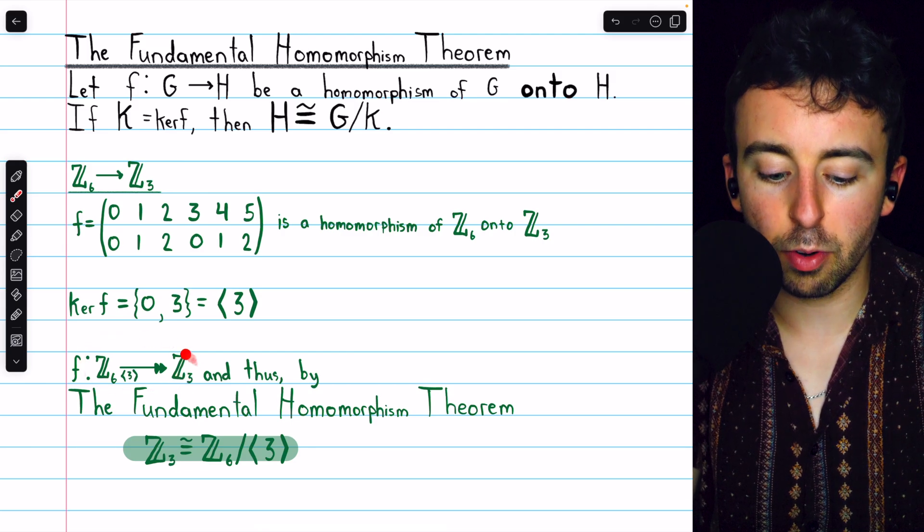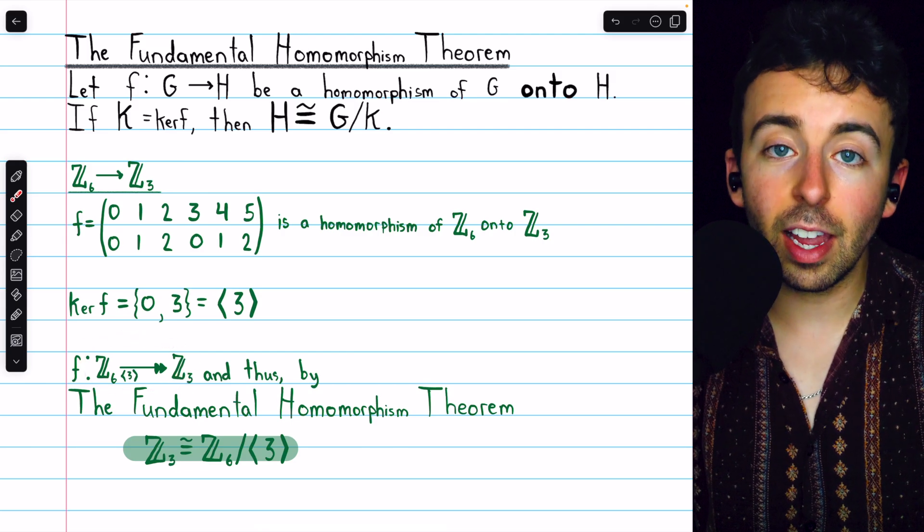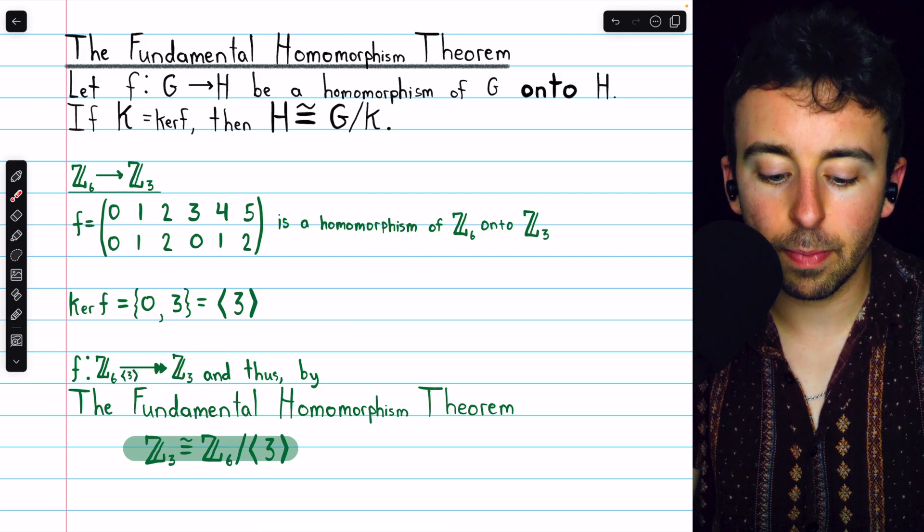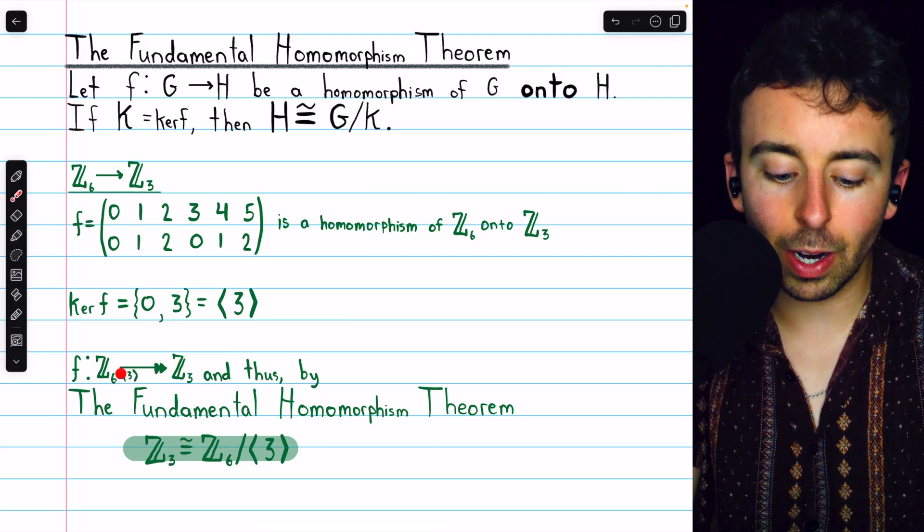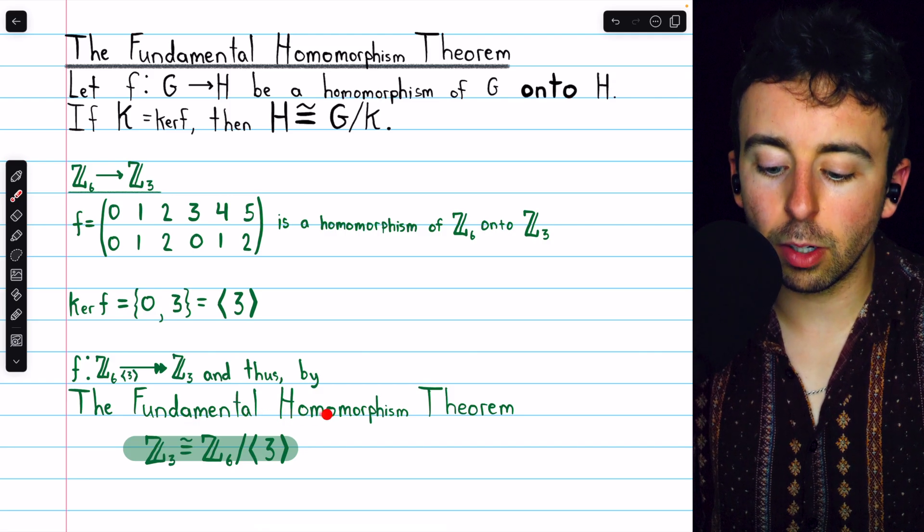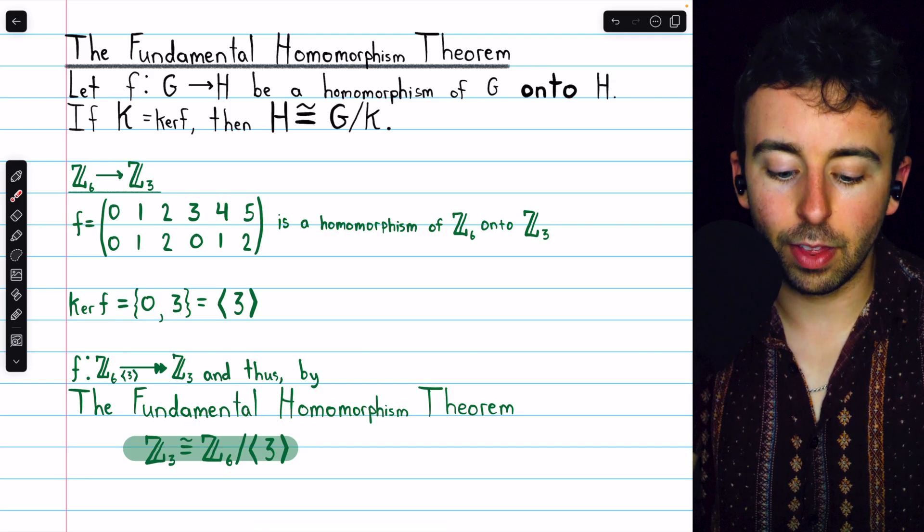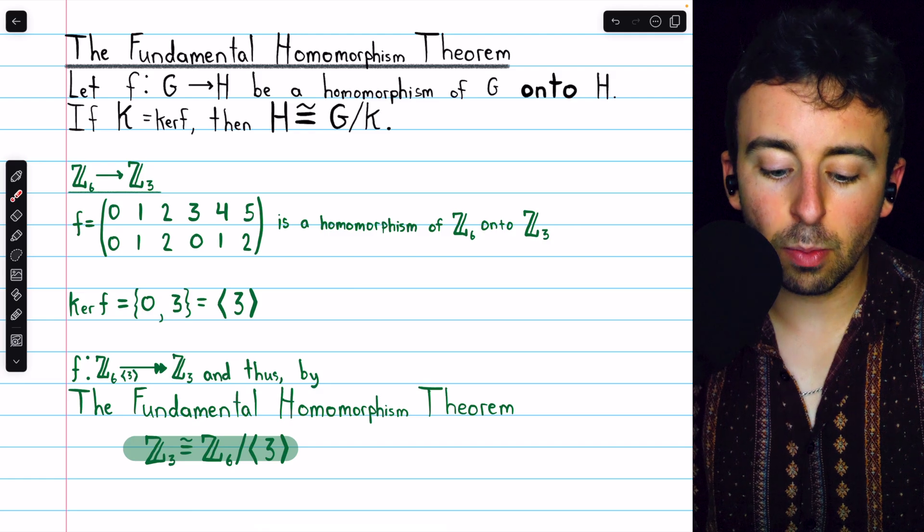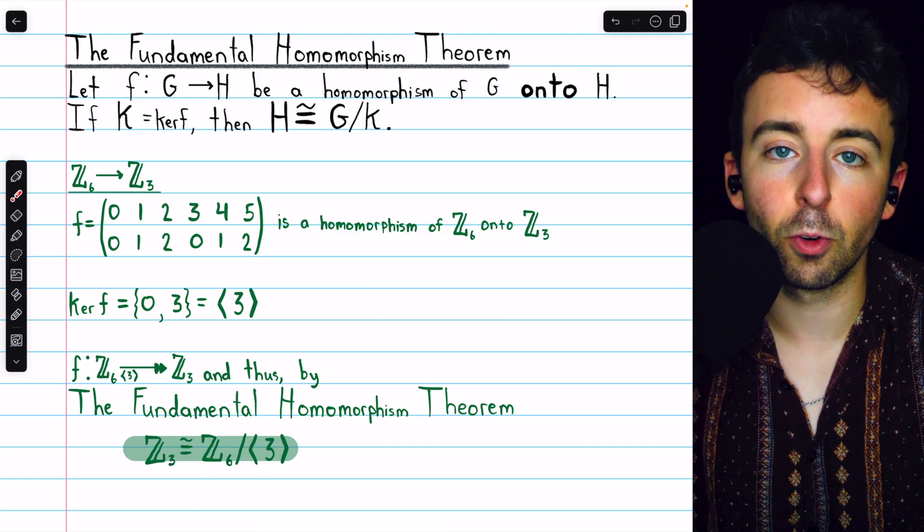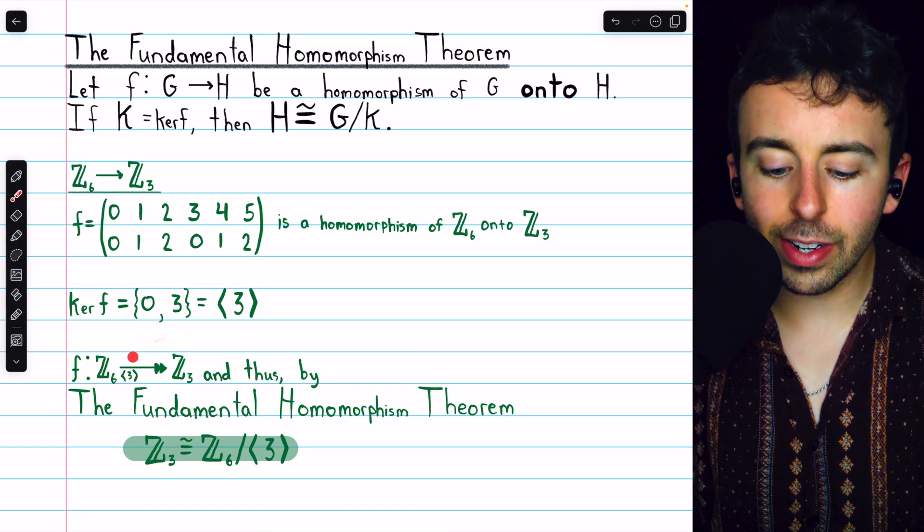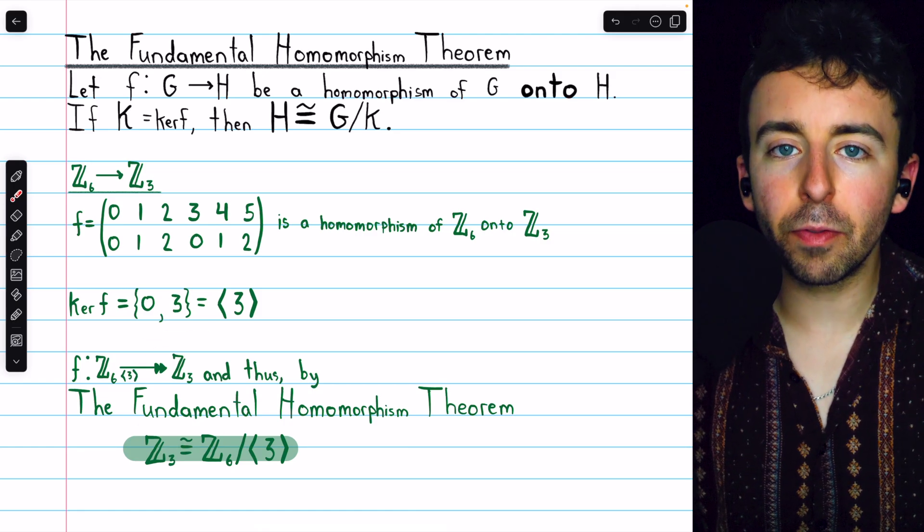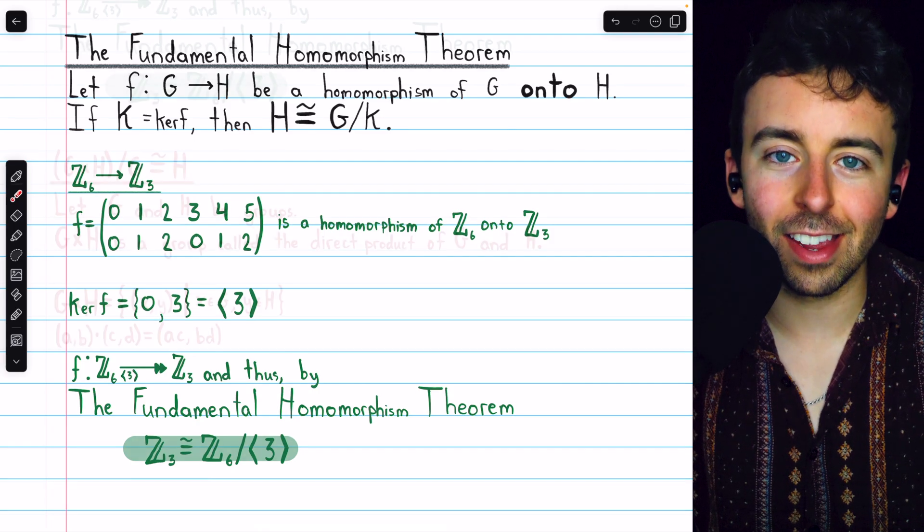This notation, which we introduced in the previous lecture, says that F is a homomorphism mapping Z6 onto Z3, with the cyclic subgroup generated by 3 as its kernel. And so, applying the fundamental homomorphism theorem, we have that Z3 is isomorphic to the quotient group of Z6 by the cyclic subgroup generated by 3. We're going to come back to this example at the end and construct the group tables, but first, let's look at another quirky example.